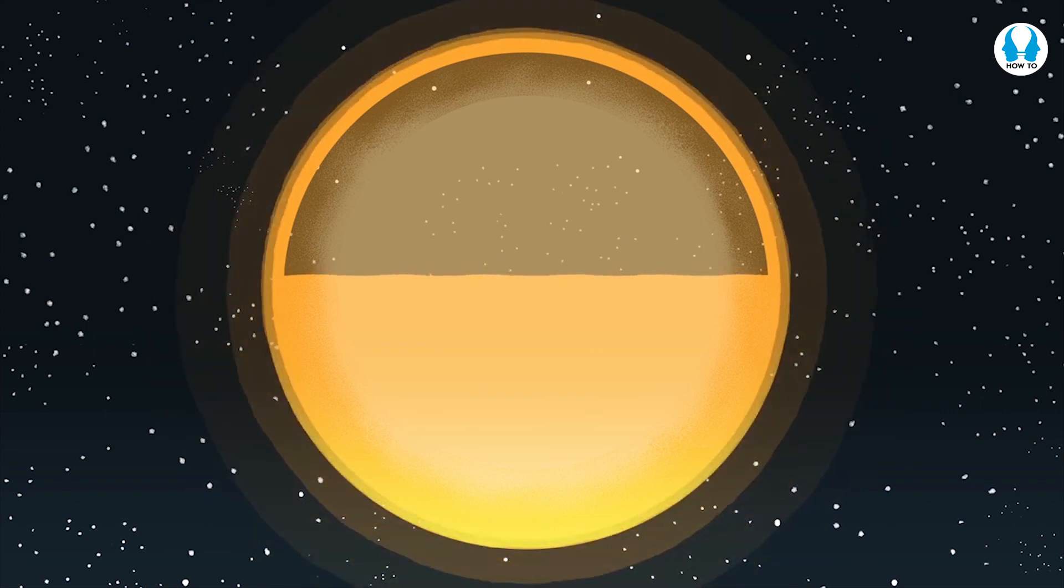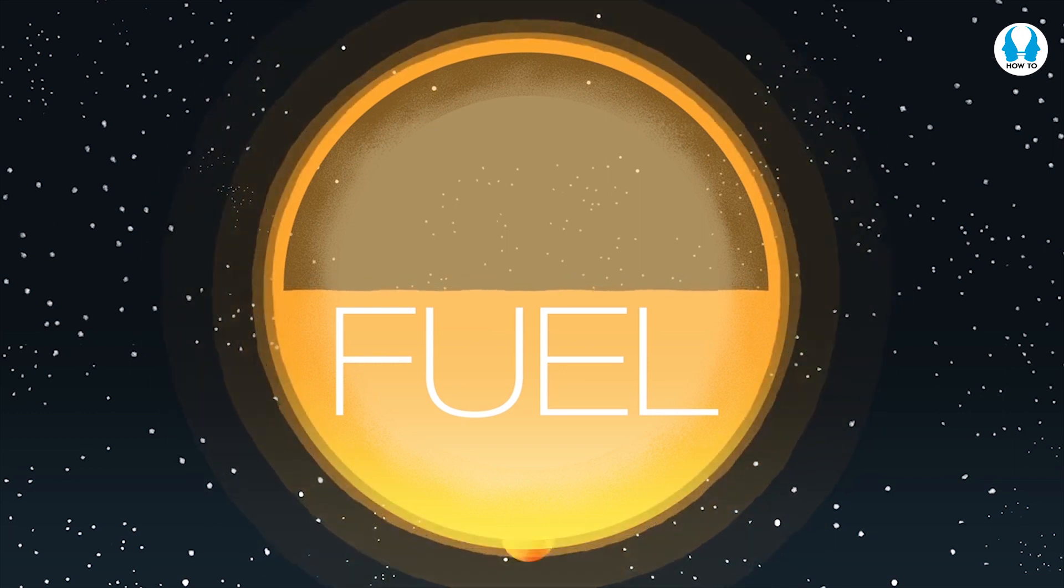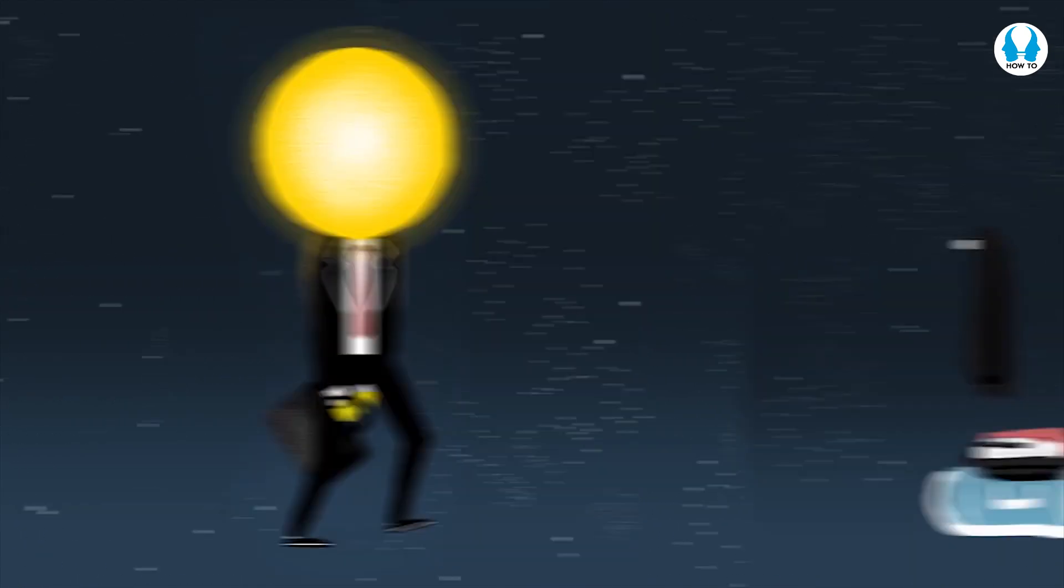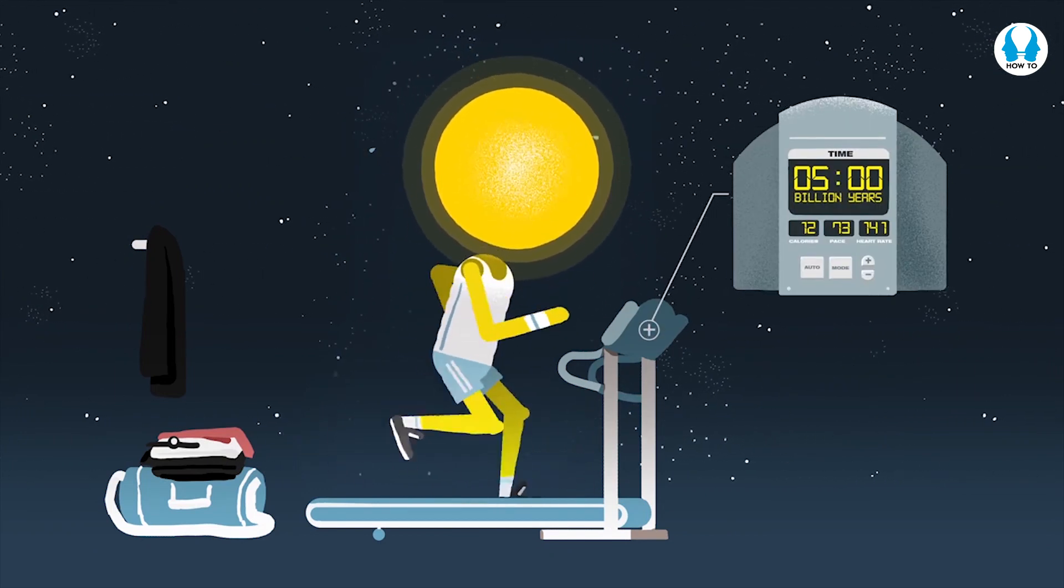Finally, if we know how much fuel our star has, we can find out how long it will last. It turns out the Sun is a middle-aged star, as it has enough fuel to keep going for another 5 billion years, after which the star we know and love will start to look very different.